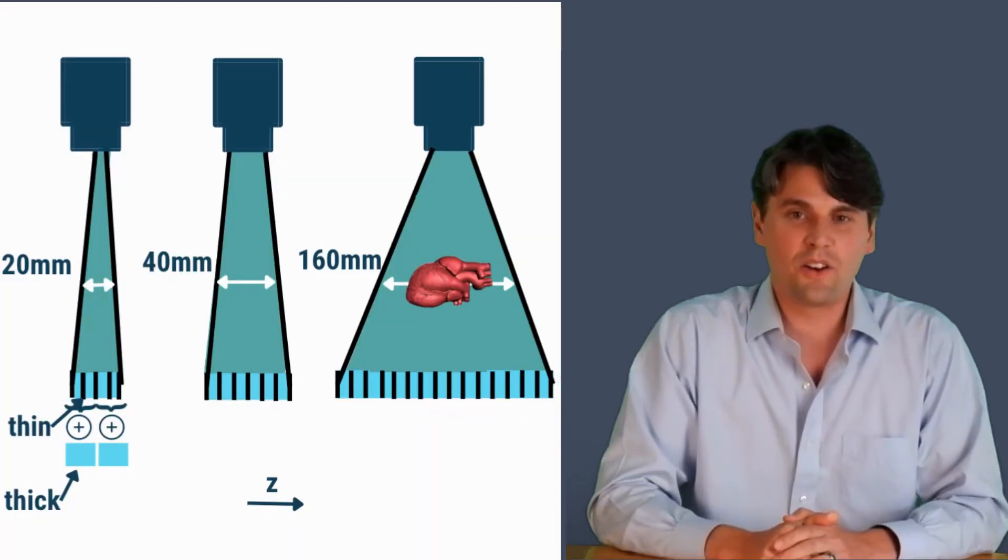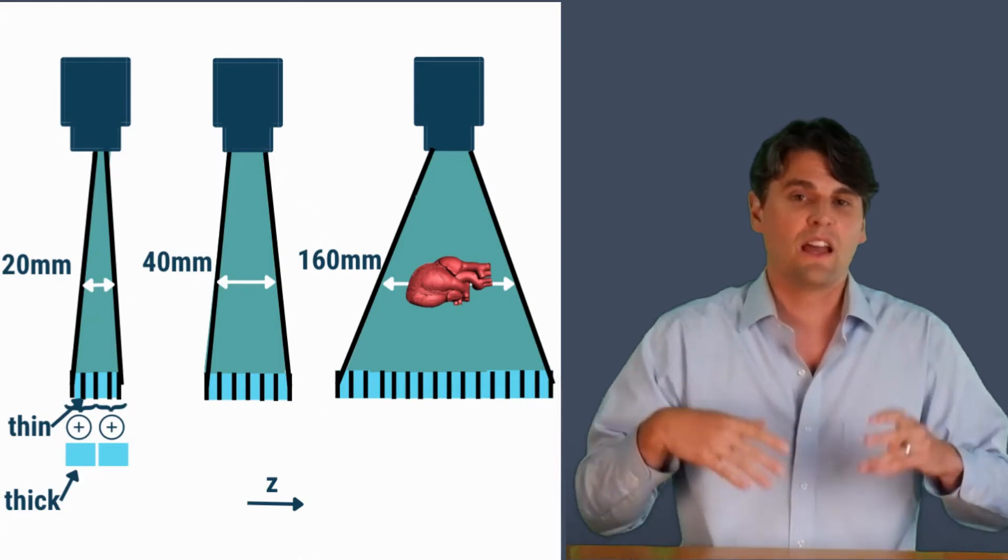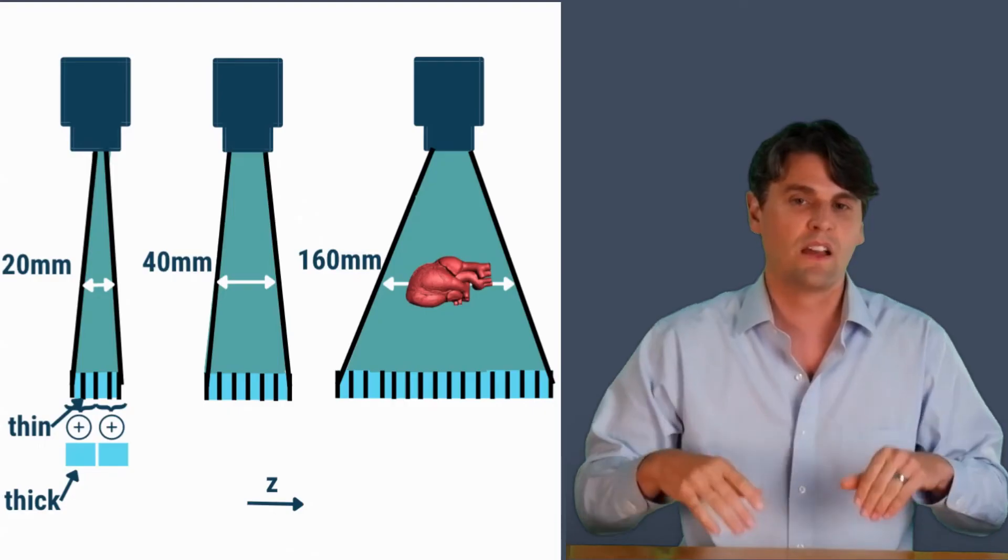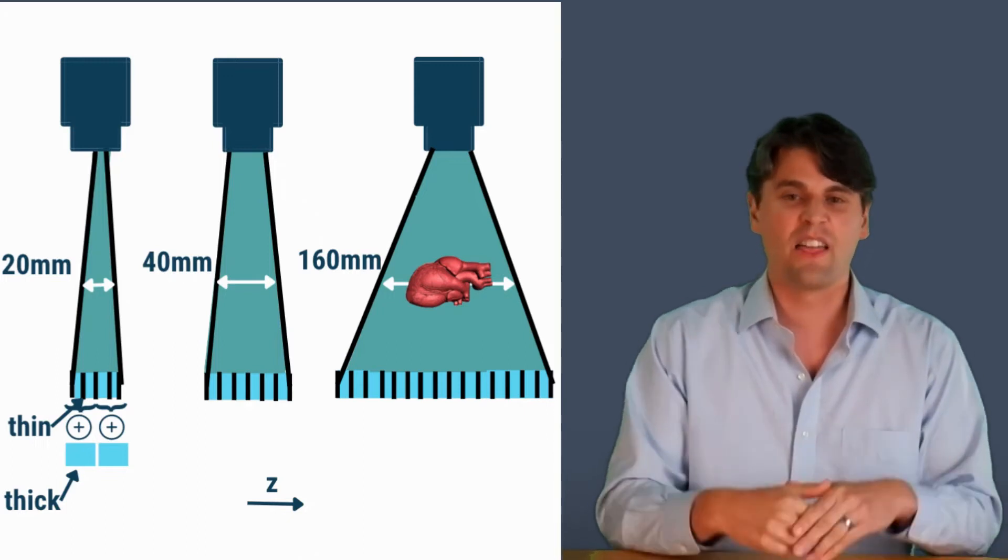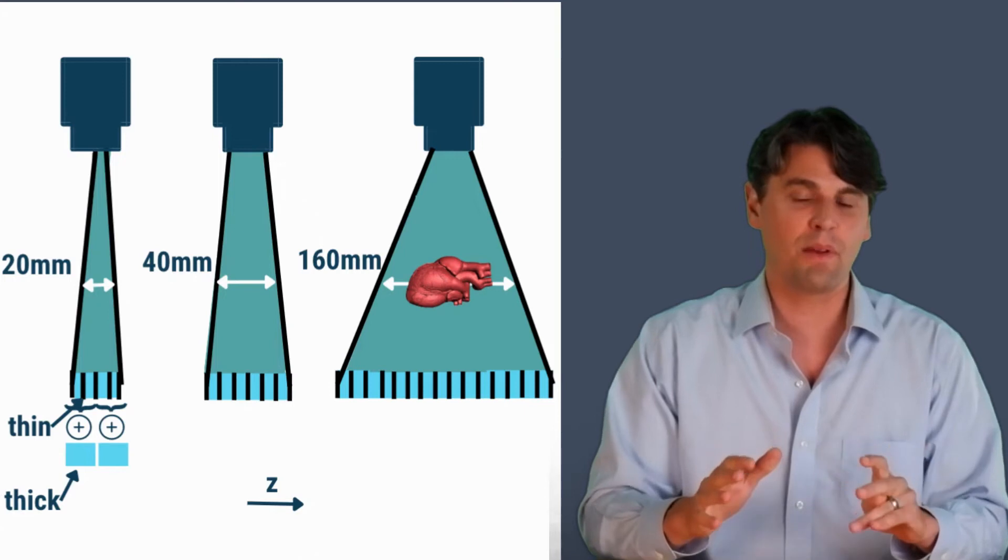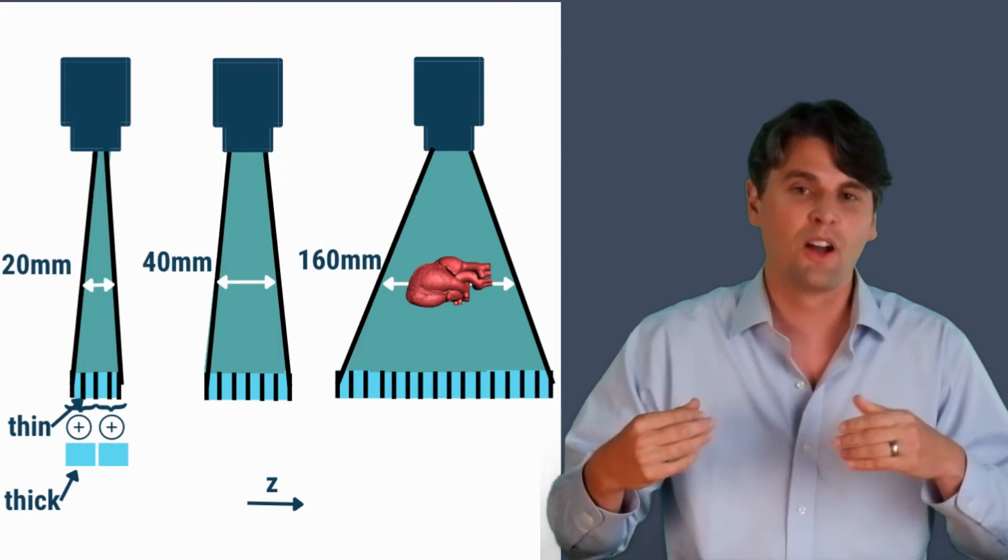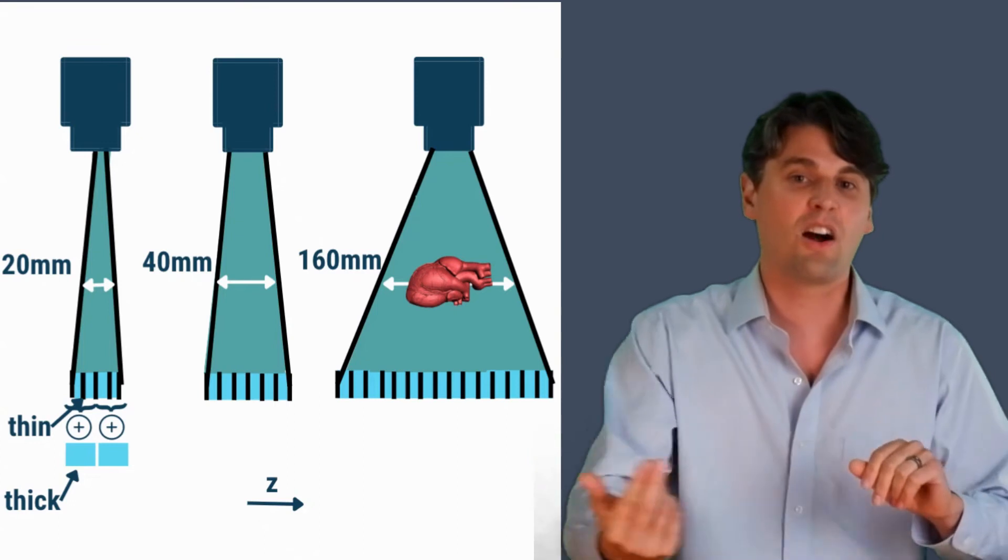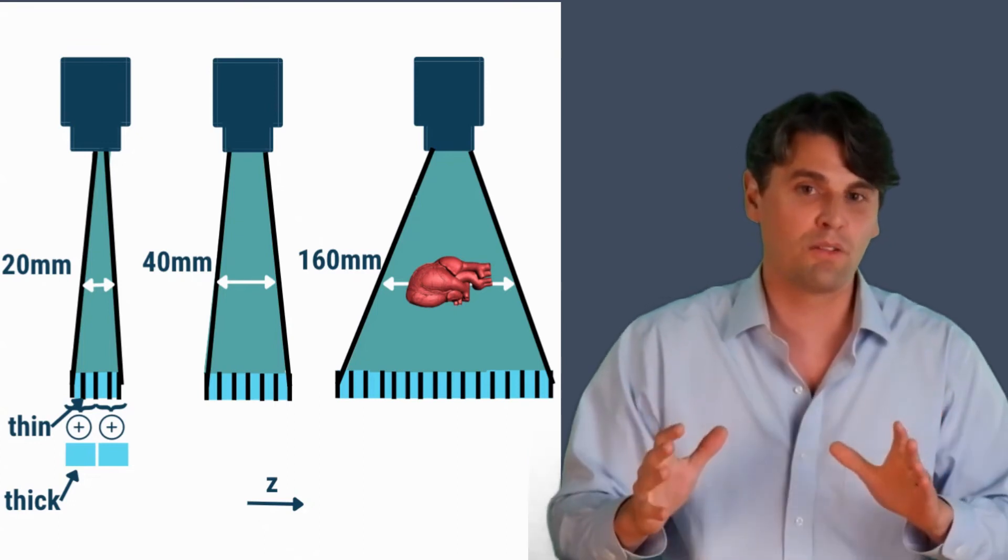It's about the 160 millimeter collimation is that most hearts are about 140 millimeters or less. You can really well cover the vast majority of human hearts with this type of a system, and you can get an image of the human heart which is very consistent and comes from just one rotation or actually a fraction of one rotation.